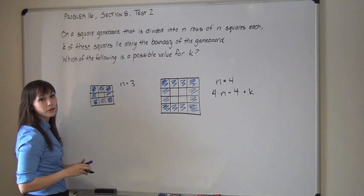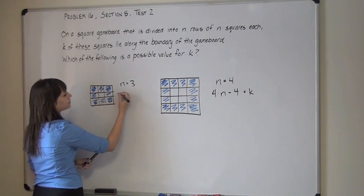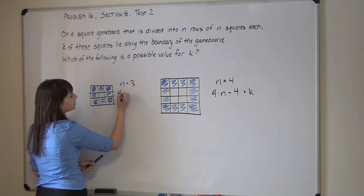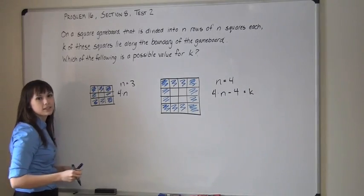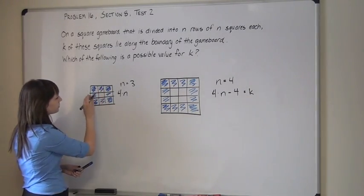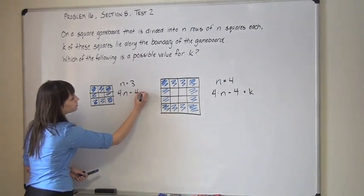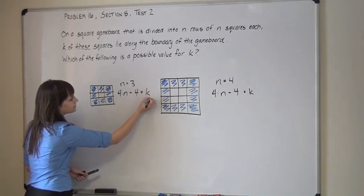But again, we've over-counted all the corners. So, 4 times n, because here n is 3, so four sets of 3, subtracting out the four corners we've over-counted gives you k.